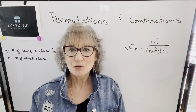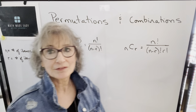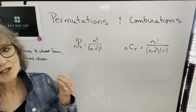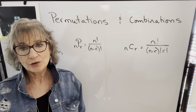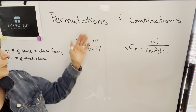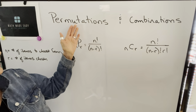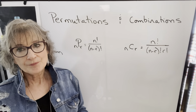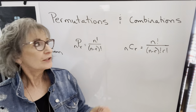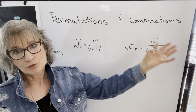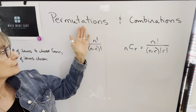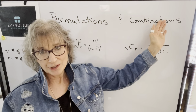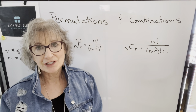In the previous video we talked about the formulas used for permutations and combinations and what those things meant. We learned that permutation is an arrangement and combination is a group. Therefore, order is important with permutations, and order is not important with combinations.